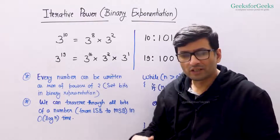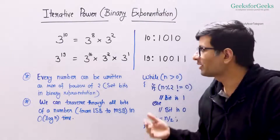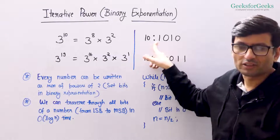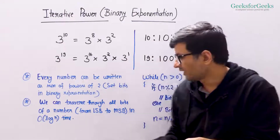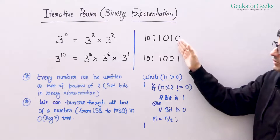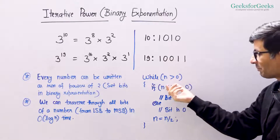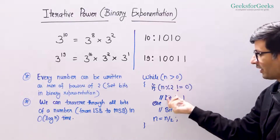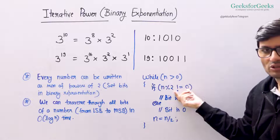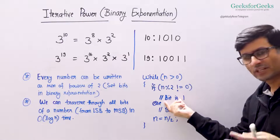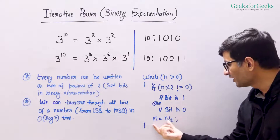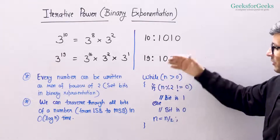The other fact is we can traverse through all the bits of a number starting from the least significant bit to the most significant bit in O(log n) time, because the binary representation has log n bits. You can run a loop like this: while n is greater than 0, if n modulo 2 is not equal to 0, it means the last bit of the current value of n is 1 — write your logic for a 1 bit here. Otherwise, the bit is 0 — write the 0-bit logic here. Then do n equal to n divided by 2. So if you run this loop for n equal to 10, what will happen?